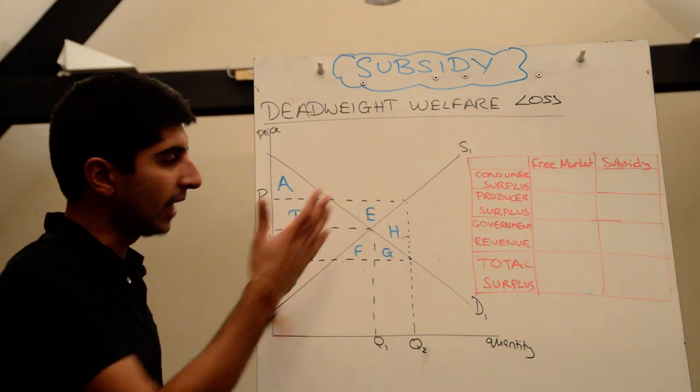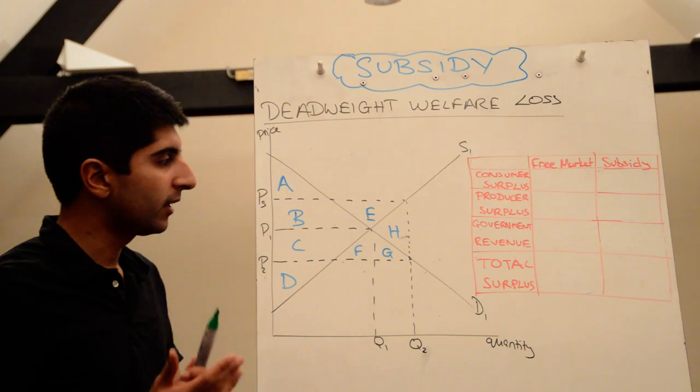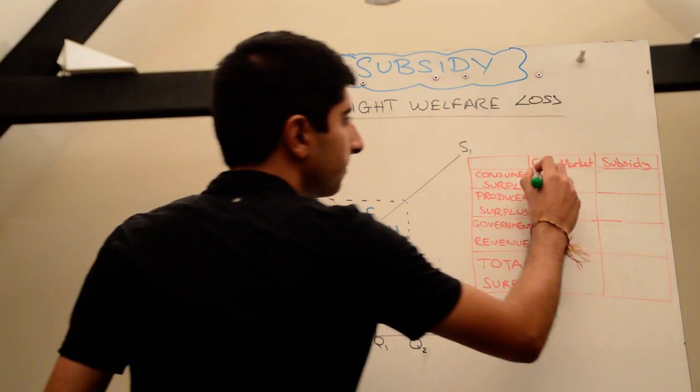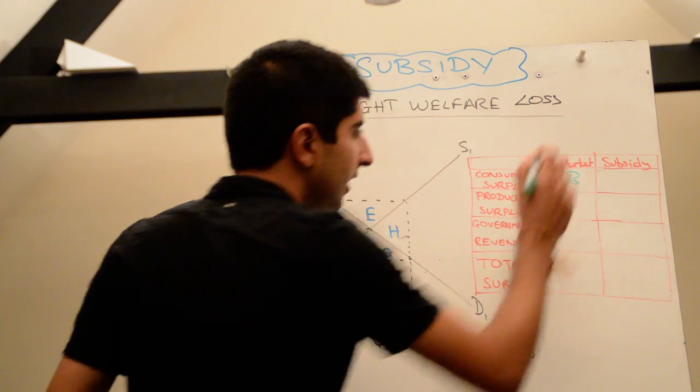Well, consumer surplus was the area beneath the demand curve and above the price, which is equal to A and B. So A plus B, the initial consumer surplus.